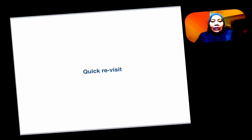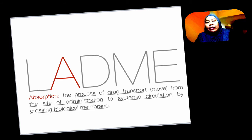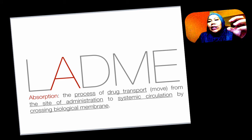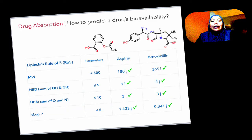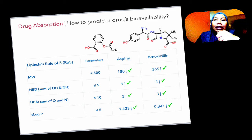Let's have a quick revisit. We've talked about oral administration, going through the stomach and through the GIT and so on. I think the critical part would be the absorption of a drug, which is the transport of the drug from the site of administration to the systemic circulation by crossing the biological membranes. Let's look at a few drugs: if you take aspirin and amoxicillin and put in the molecular weight, HBD, HBA and so on, they all fulfill Lipinski's Rule of Five. So they are also given as oral drugs.